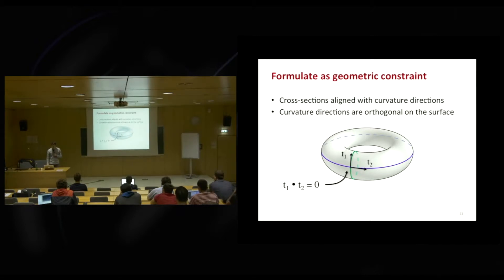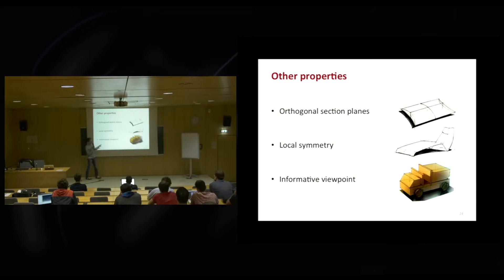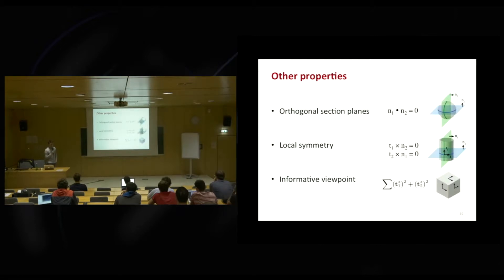Using the same methodology, we derived other properties of cross-sections: they are often created by intersecting the shape with orthogonal section planes, they often delineate global or local symmetry, and designers often draw from an informative viewpoint — a three-quarter viewpoint that shows most of the shape, showing all sides of an object rather than just a side view. We try to express all those properties as mathematical properties of the curves we are trying to reconstruct.